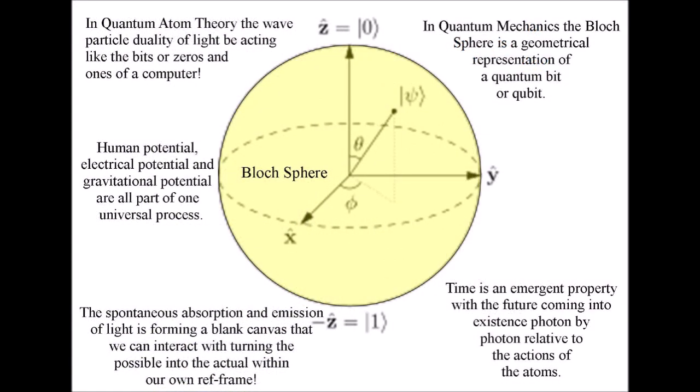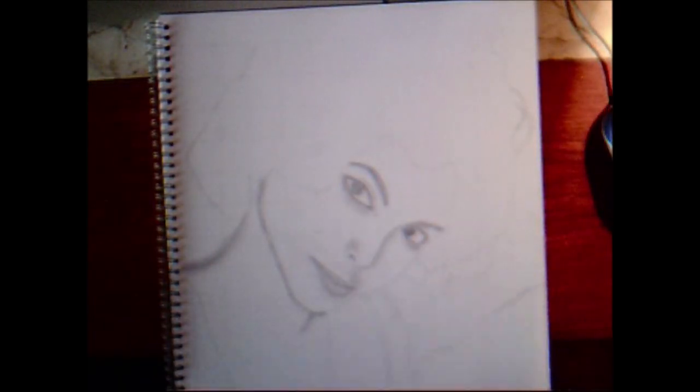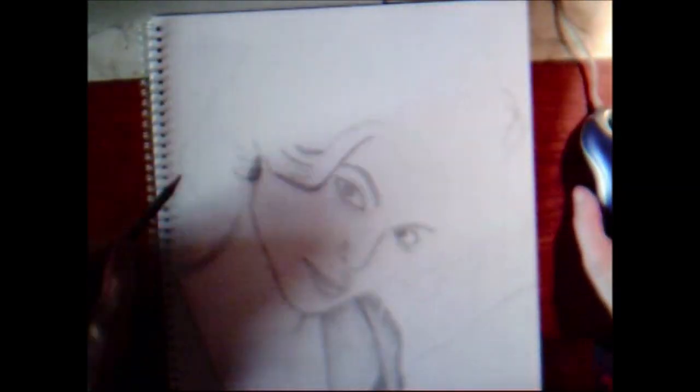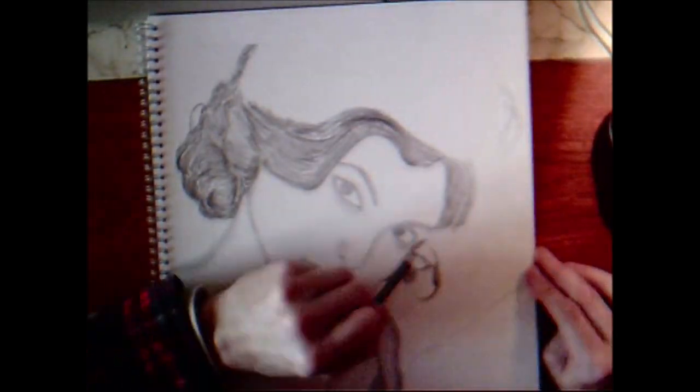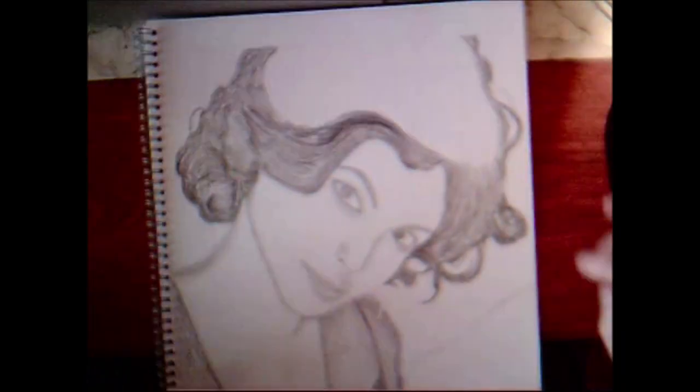With each photon spherical oscillation, the wave-particle duality of light and matter in the form of electrons are forming a blank canvas that we can interact with, forming the possible into the actual. In this theory creation is truly in the hand and eye of the beholder.